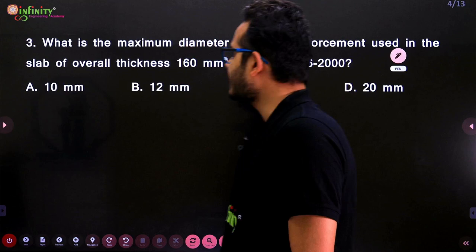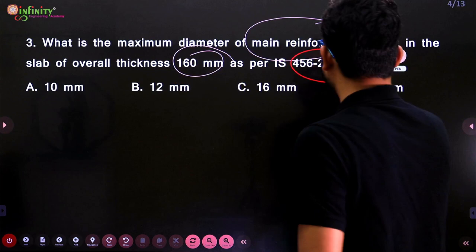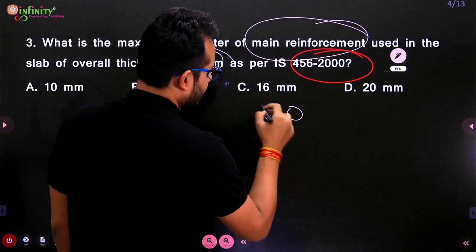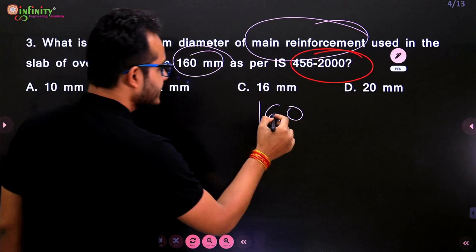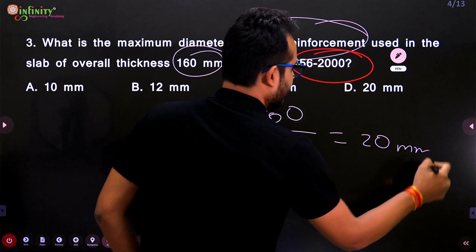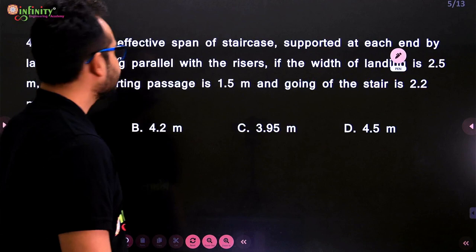Next question: What is the maximum diameter of main reinforcement used in a slab of overall thickness 160 mm, as per IS 456:2000? For a slab, the maximum diameter of main reinforcement = overall thickness / 8 = 160 / 8 = 20 mm. As per the options given, the answer is (d).